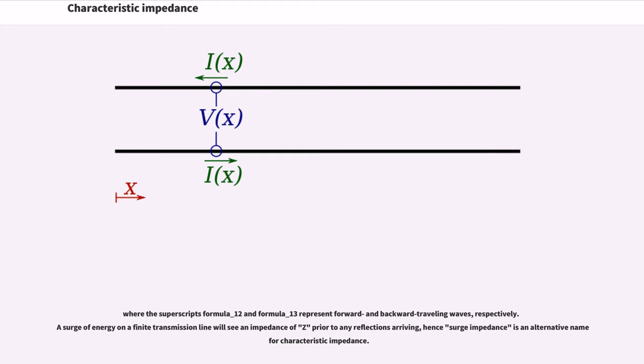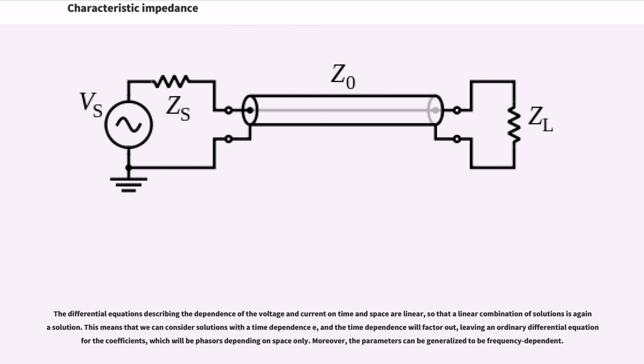A surge of energy on the finite transmission line will see an impedance of Z prior to any reflections arriving, hence surge impedance is an alternative name for characteristic impedance. The differential equations describing the dependence of the voltage and current on time and space are linear, so that a linear combination of solutions is again a solution. This means that we can consider solutions with the time dependence e^(jωt), and the time dependence will factor out, leaving an ordinary differential equation for the coefficients, which will be phasors depending on space only. Moreover, the parameters can be generalized to be frequency-dependent.